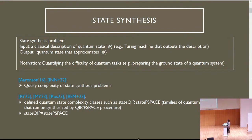The state synthesis problem is given as follows. For the input, we have a classical description of some specific quantum state, psi. And for the output, we have to output some quantum state that approximates the input quantum state, psi. The motivation of this problem is to quantify the difficulty of quantum tasks, such as preparing the ground state of a quantum system.